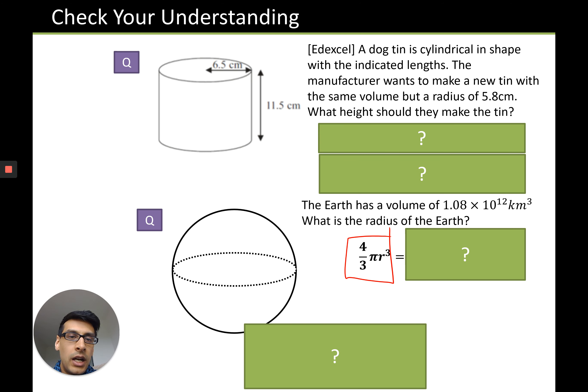So the answers for question one - you have been told that the manufacturer wants to make a new tin with the same volume but a radius of 5.8. First of all you work out the volume of the cylinder given and you know that's represented by pi times 6.5 squared times 11.5.